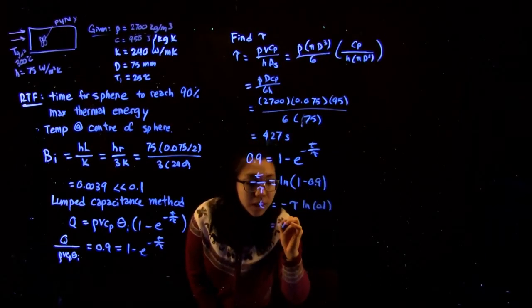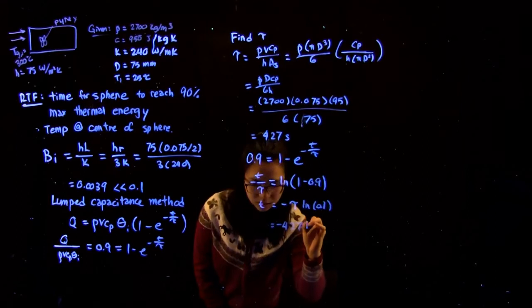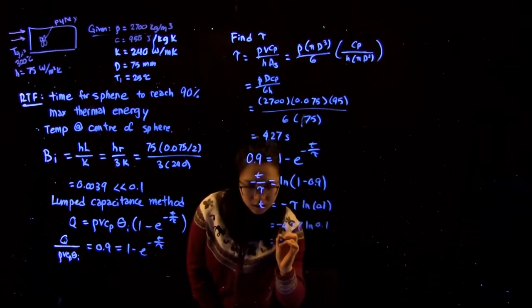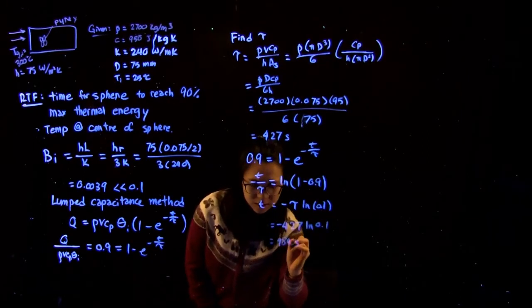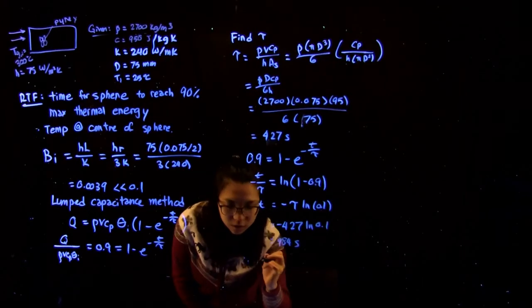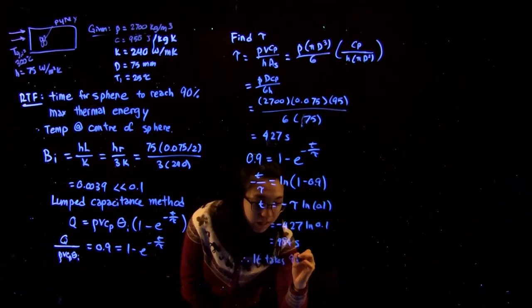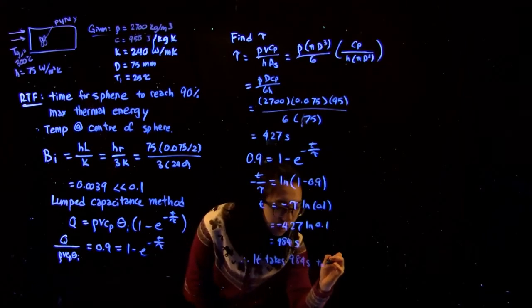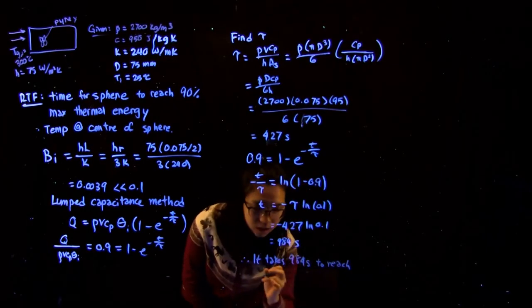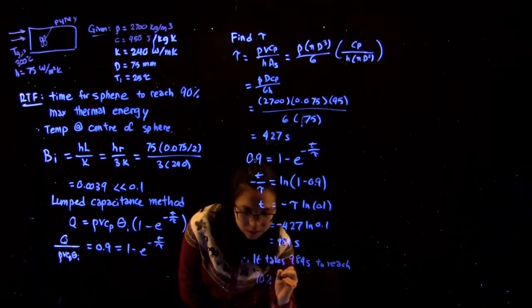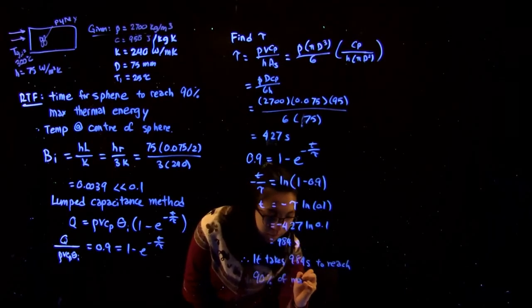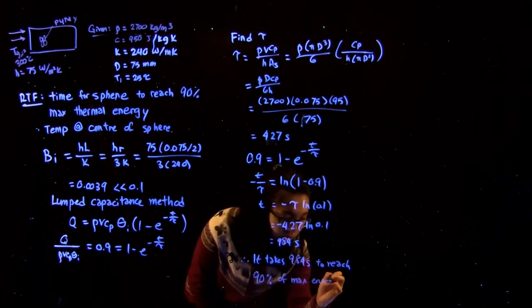This says T equals minus tau ln of 0.1. Substituting our values gives 984 seconds. Therefore, it takes 984 seconds to reach 90% of the maximum energy transferred.